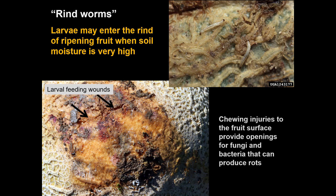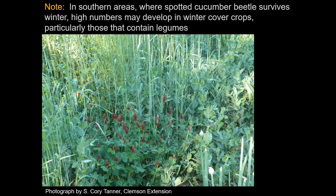Spotted cucumber beetle larvae are also rindworms — normally feeding on roots, but if there is high moisture near harvest when fruit is ripening, they may move into the fruit and cause wounding that allows entry courts for pathogens. In the southern United States this insect reproduces pretty much continuously. Winter cover crops pose a risk particularly if legumes are included, since where this insect overwinters — in the southern half of the U.S. with mild winters — it can develop high populations in that winter cover crop, and when you till it in you could have large numbers of adults emerging from that field.